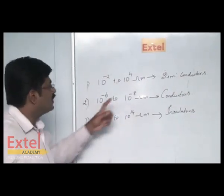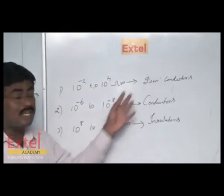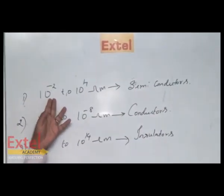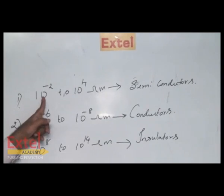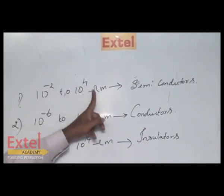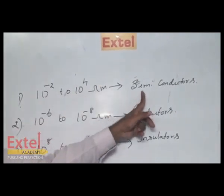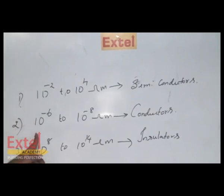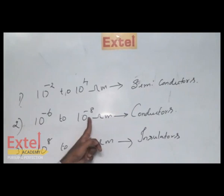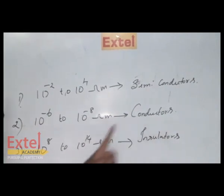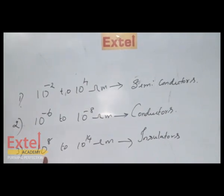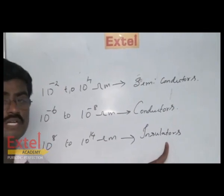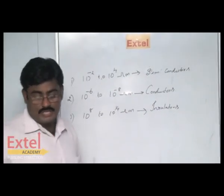These are the classifications of materials based on electrical resistivity value. If the resistivity ranges from ten to the power minus two to ten to the power four ohm meter, the material must be called a semiconductor. If the resistivity ranges from ten to the power minus six to ten to the power minus eight ohm meter, they are called conductors. If the resistivity is so high, ranging from ten to the power eight to ten to the power fourteen ohm meter, those materials are called insulators.